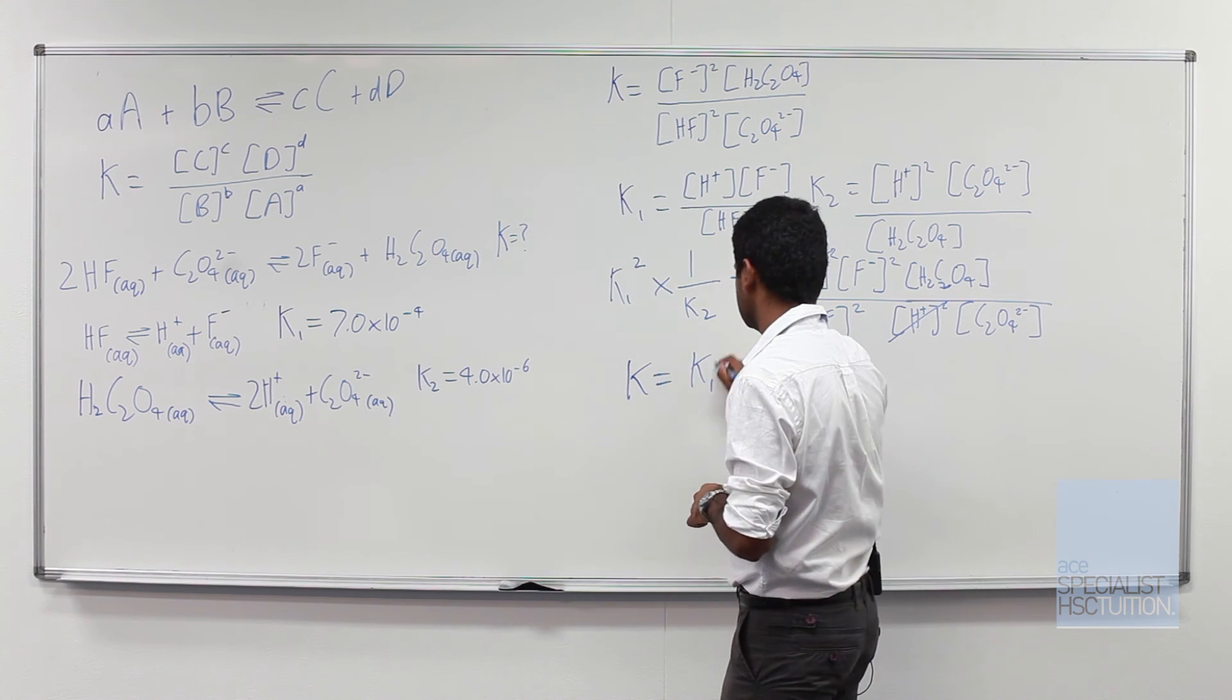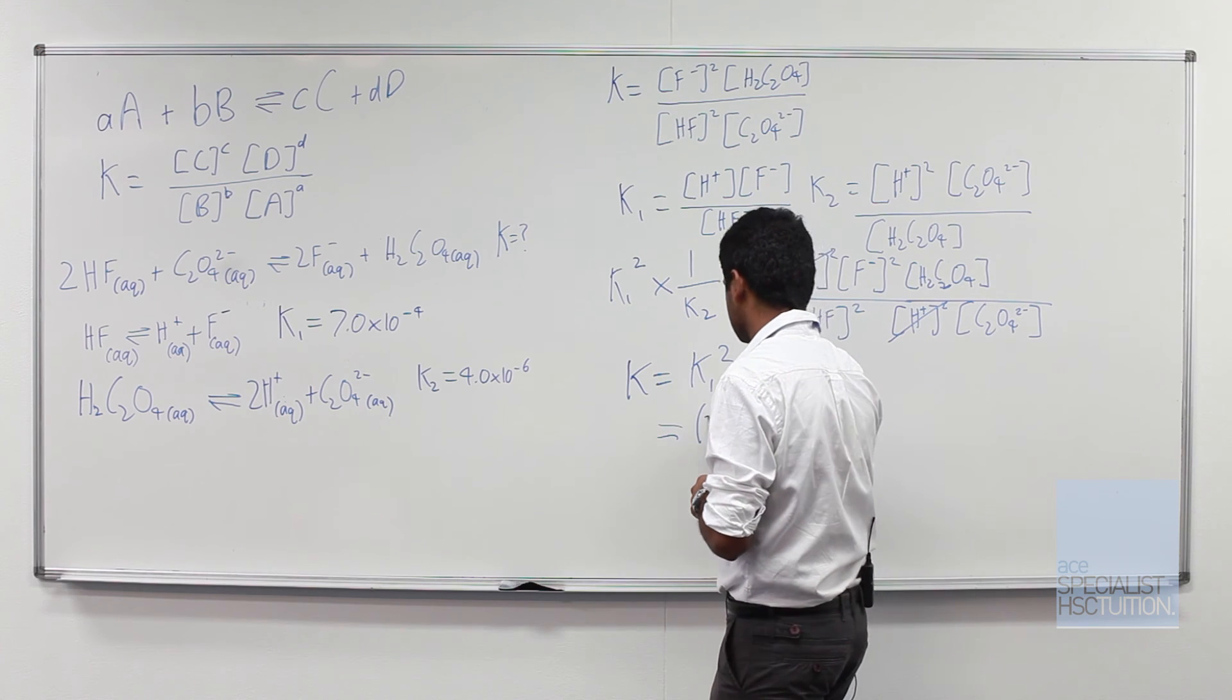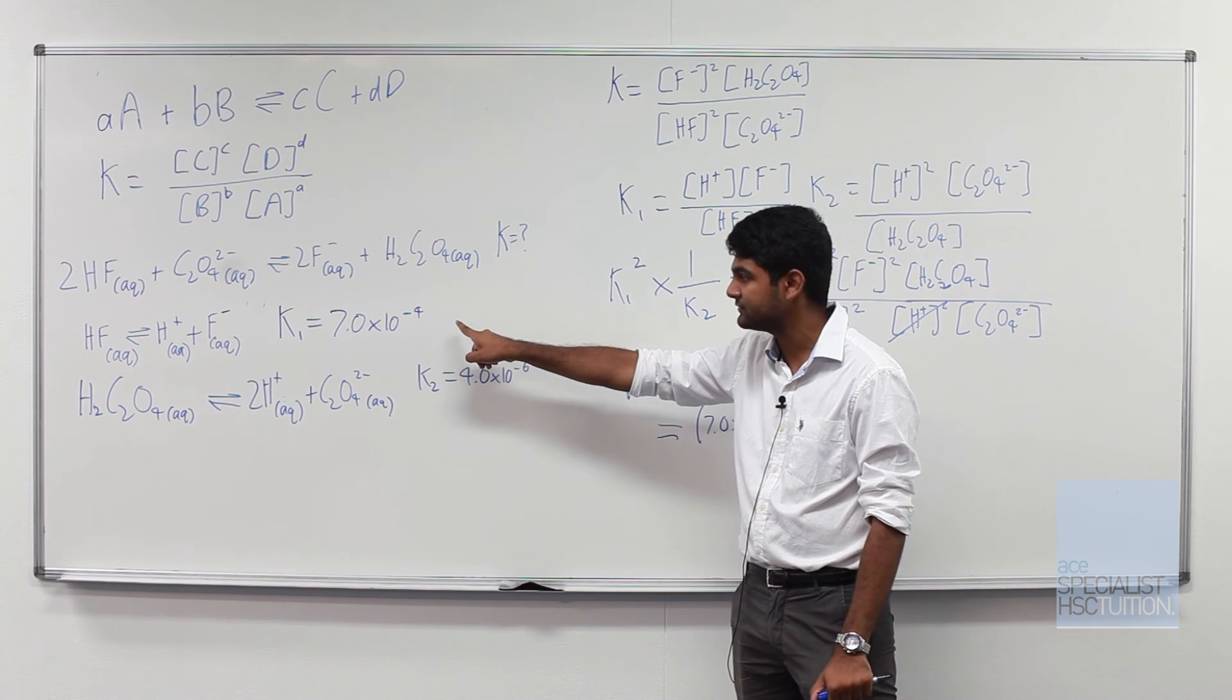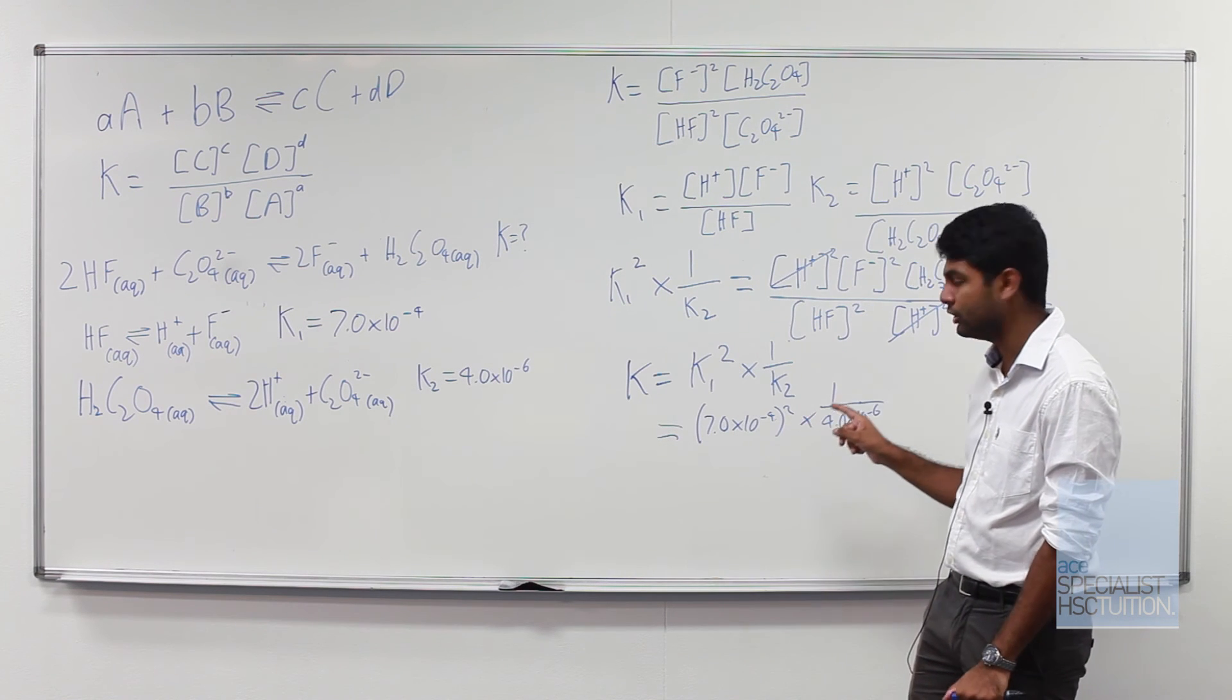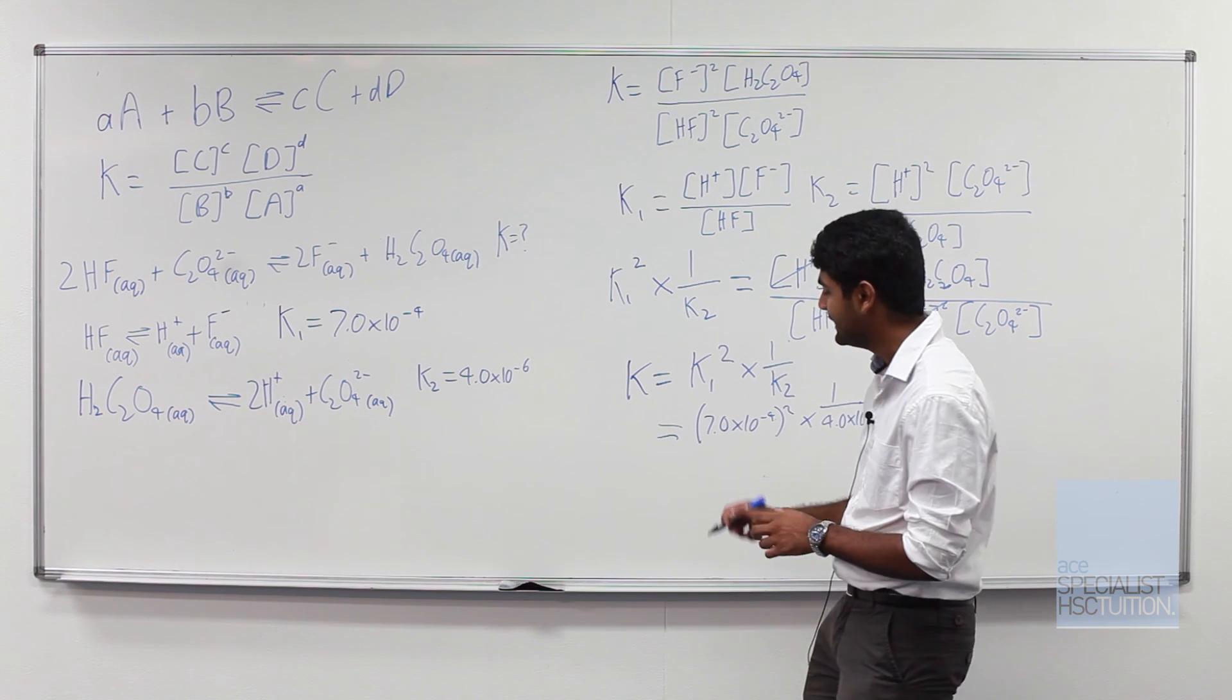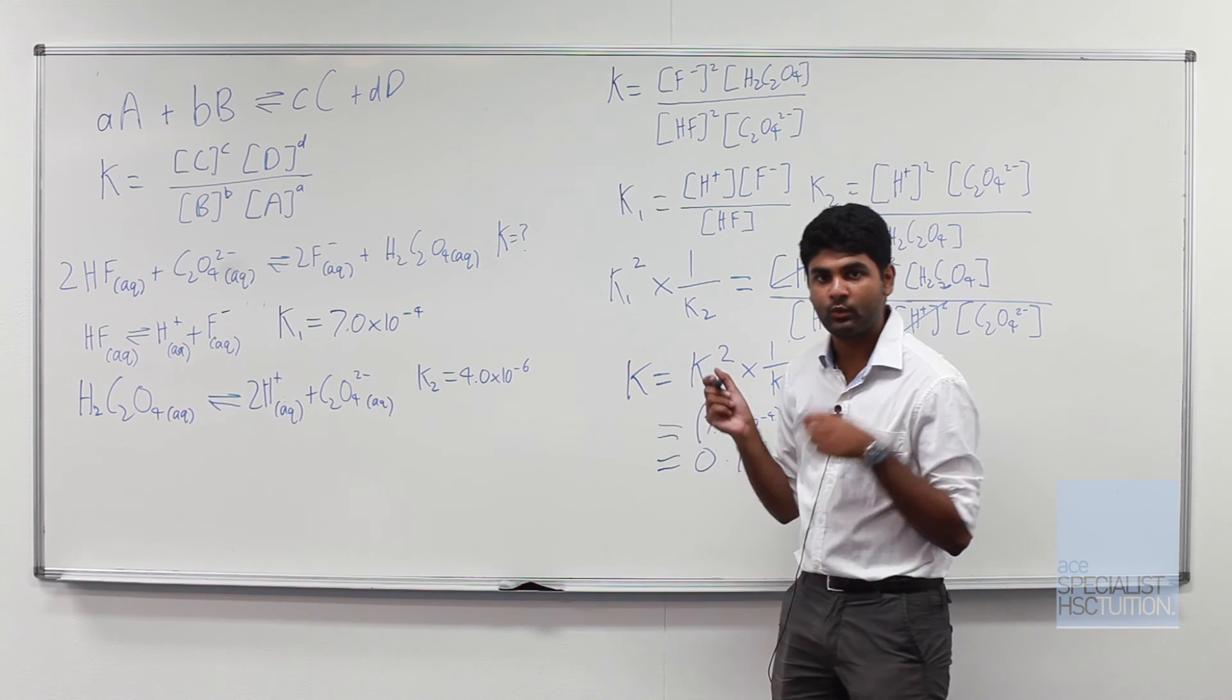As a result, K equals K1 squared multiplied by 1 over K2 which is equivalent to 7.0 times 10 to the minus 4 squared all over 4.0 times 10 to the minus 6. Now we plug that into the calculator, we get 0.12.